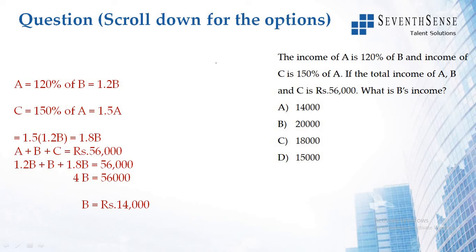Income of A is 120% of B, and income of C is 150% of A. If the total income of A, B, and C is Rs. 56,000, what is B's income?